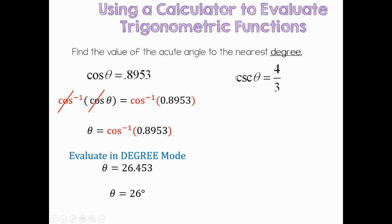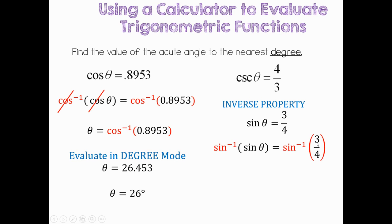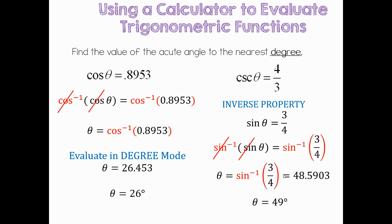On your graphing or scientific calculator, you don't have a cosecant inverse button. This is where we need to know our identities — the inverse identity for cosecant uses sine. So if cosecant of theta equals 4/3, then sine of theta equals 3/4. Now you can use sine inverse on both sides. Sine inverse cancels out sine, leaving just theta, so theta equals the sine inverse of 3/4, which gives 48.5903 degrees. Rounded to the nearest degree, that's 49 degrees — always include the label.